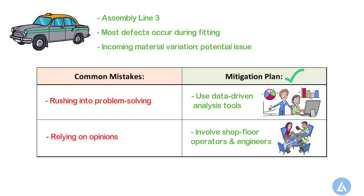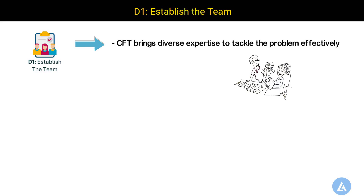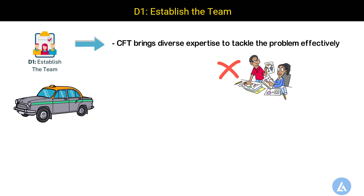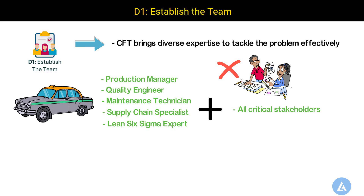Once we are ready with preparation and preliminary data in hand, we move to the next step, D1 — Establish the Team. A well-formed cross-functional team brings diverse expertise to tackle the problem effectively, since a single department cannot always identify and resolve the root cause alone. For our problem, team members include: a Production Manager who understands the process, a Quality Engineer who monitors defects, a Maintenance Technician who evaluates equipment issues, a Supply Chain Specialist who reviews incoming material quality, and a Lean Six Sigma Expert who provides problem-solving methodology. Please make sure all critical stakeholders are represented.